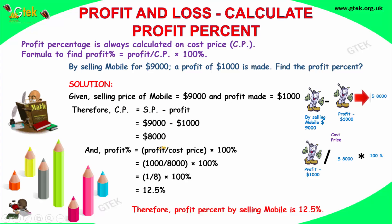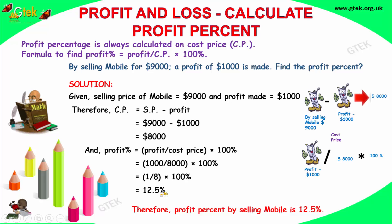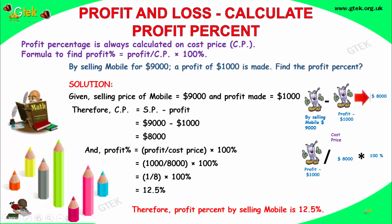I got my profit as $1000. So: 1000 divided by 8000, multiplied by 100 — you get 12.5%. The profit percentage is 12.5%.